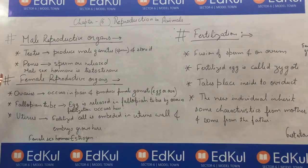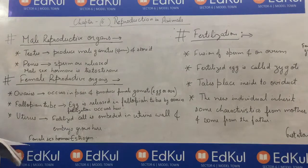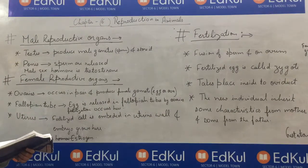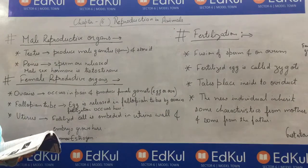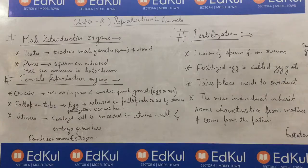Male reproductive organs consist of 2 parts: testis and penis. You can see the diagram of the male reproductive organ from your book — it is titled 'human male reproductive system'. These testis are embedded in a skin called scrotum. That skin present on the testis is known as scrotum.